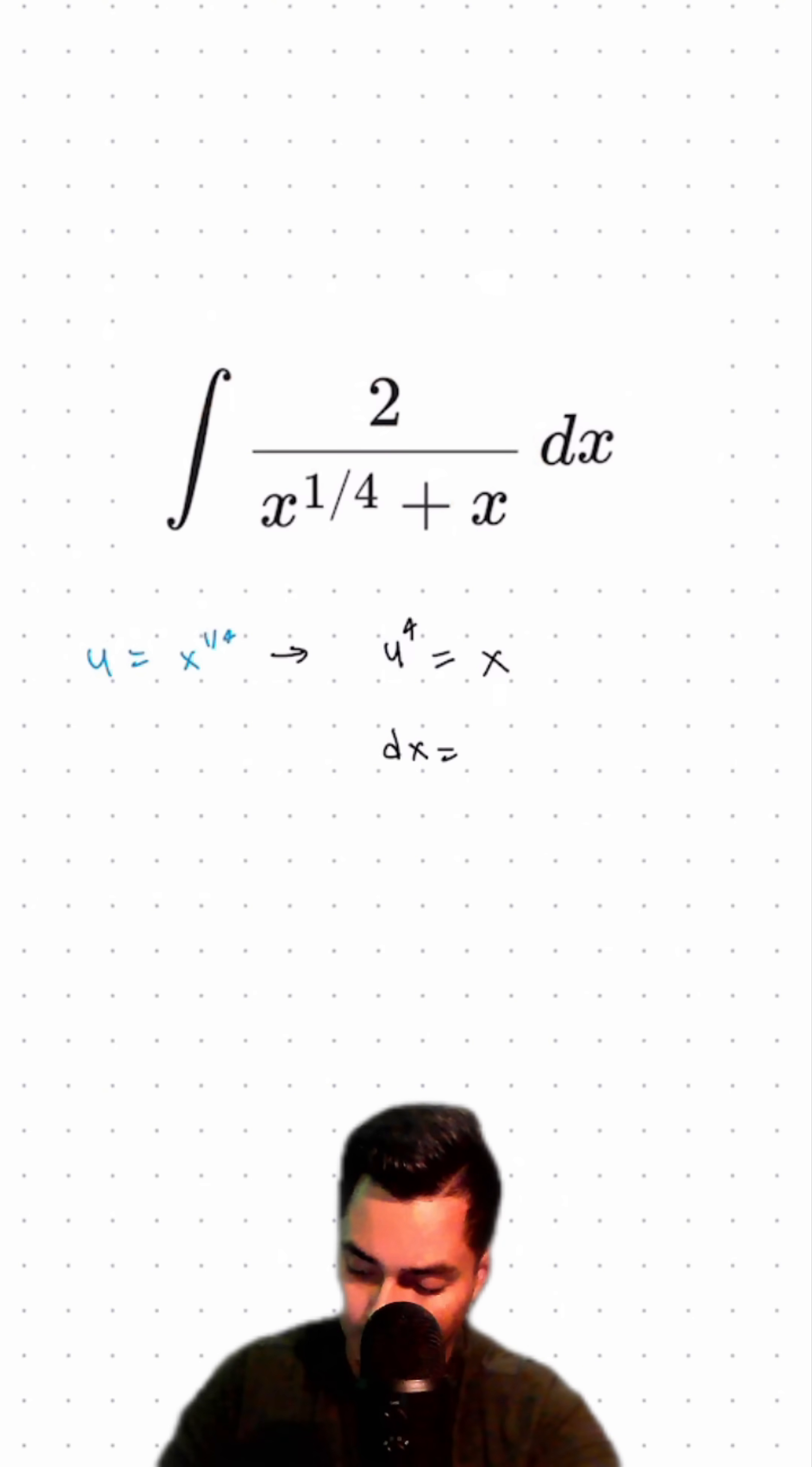So dx is equal to 4u cubed du. That way we can replace our dx term as well as our x terms.